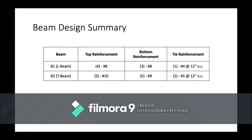In summary, for beam B1: top reinforcement — four number eight rebars; bottom reinforcement — three number eight rebars; tie reinforcement — one number four at 12-inch spacing. For beam B2: top reinforcement — five number ten rebars; bottom reinforcement — five number nine rebars; tie reinforcement — two number fives at 12-inch spacing.